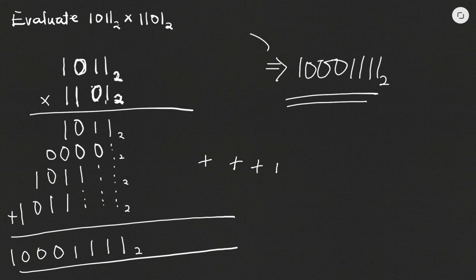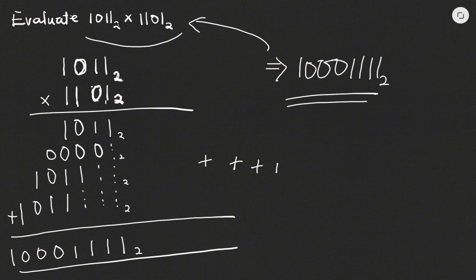So this is my final answer: 10001111 base 2, when I multiply those two numbers. Thank you so much for watching — this is how we do multiplication in number bases. Thank you once again for watching and I will see you in the next video, bye.